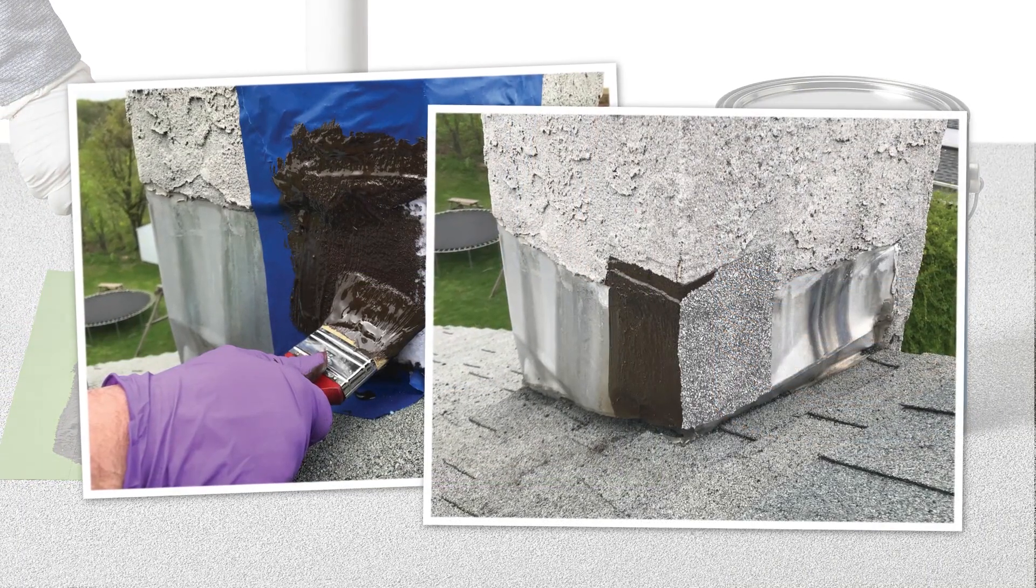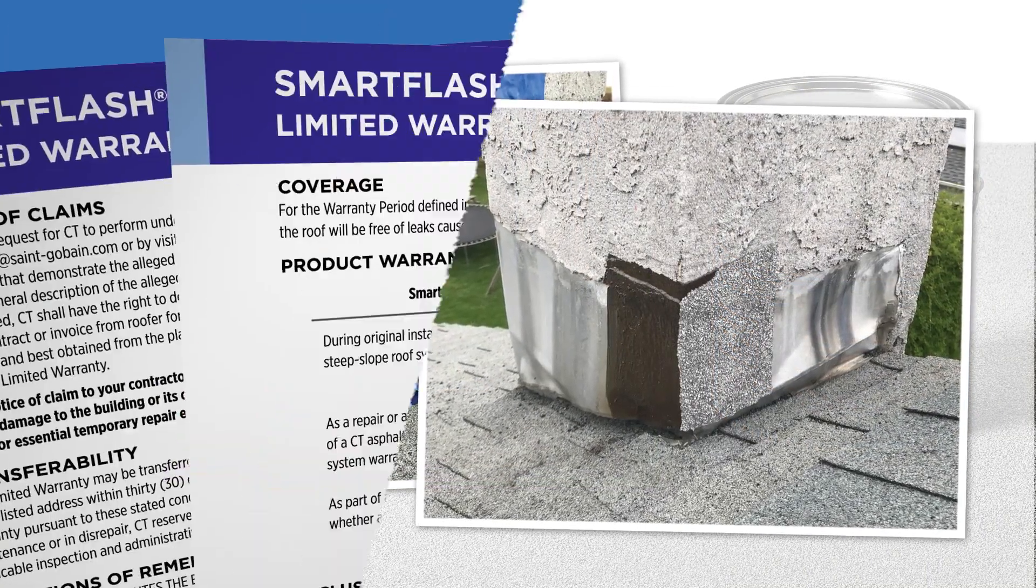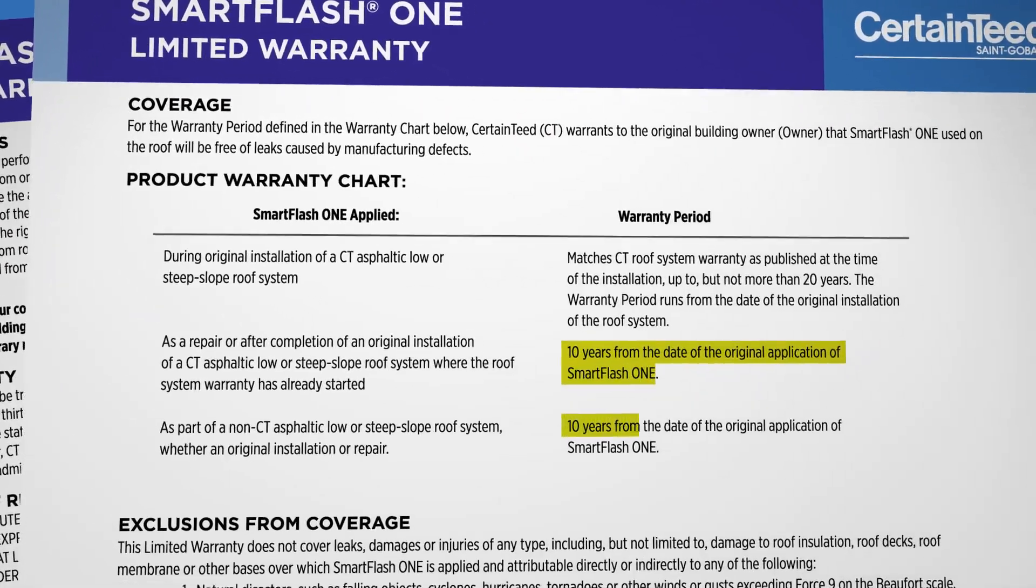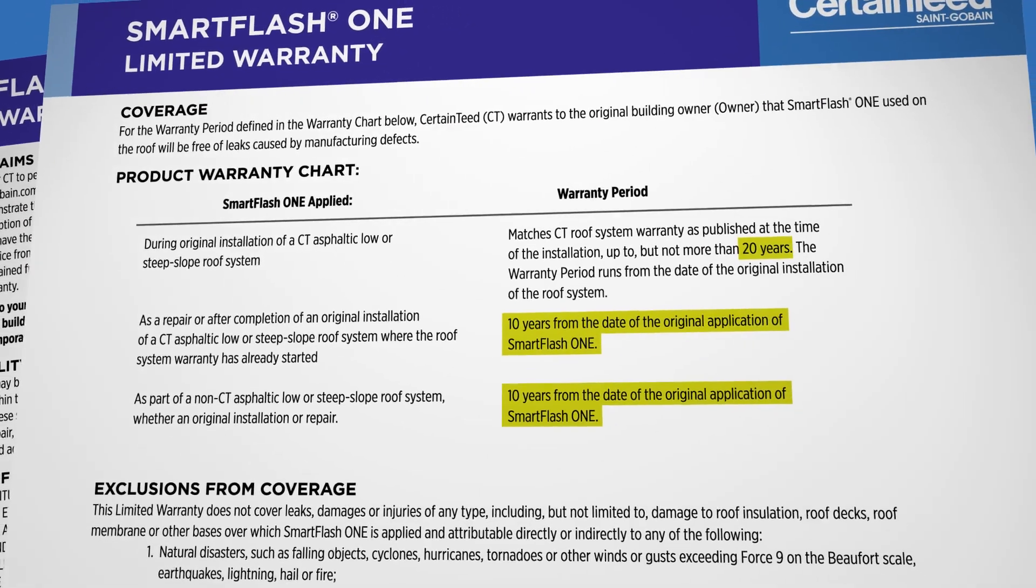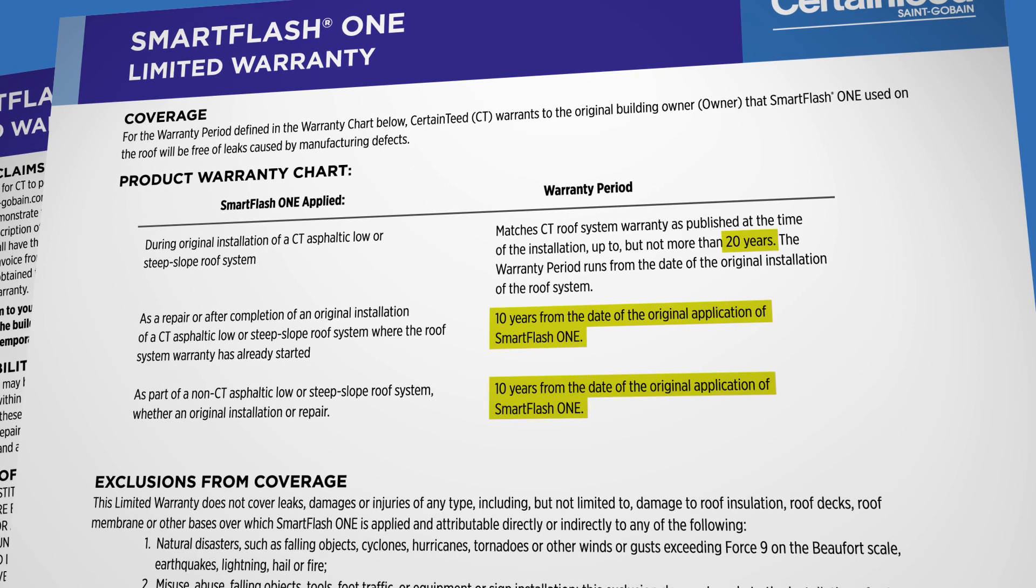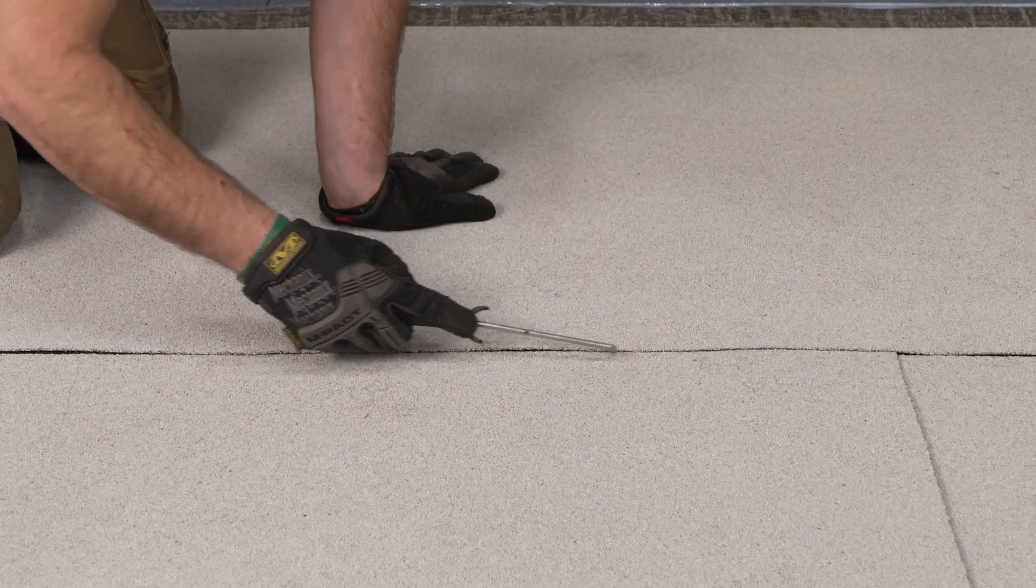CertainTeed is so confident in this product's performance that we offer an unprecedented 10-year performance warranty on repairs and up to 20-year warranty coverage for new flashings on a CertainTeed roof. Let's walk through an open lap repair so you get a sense of the application.